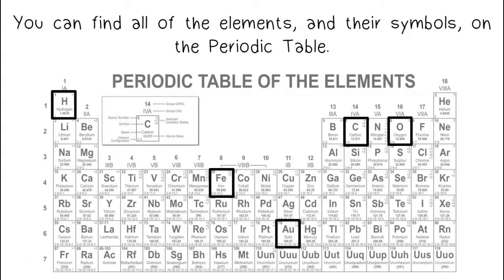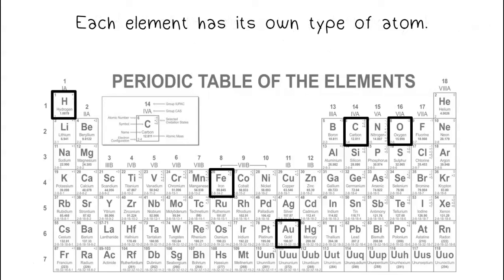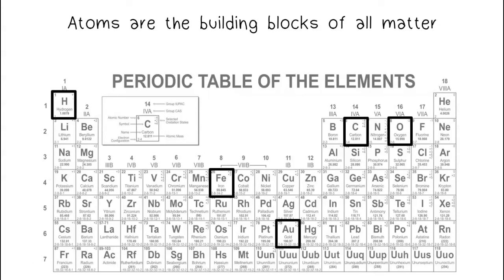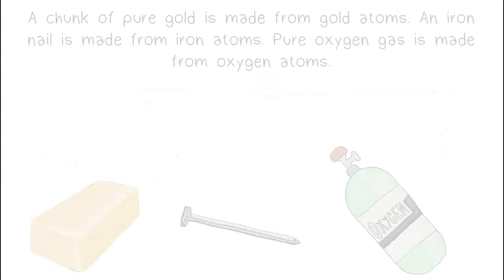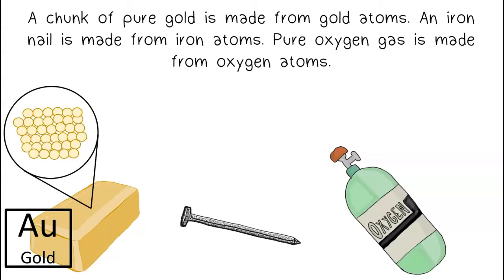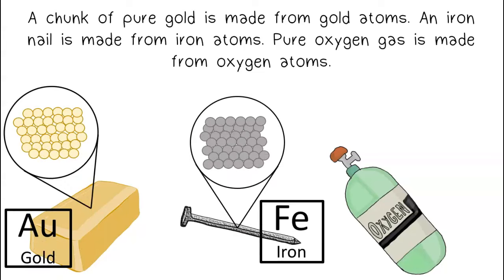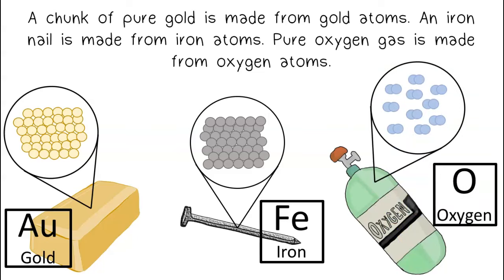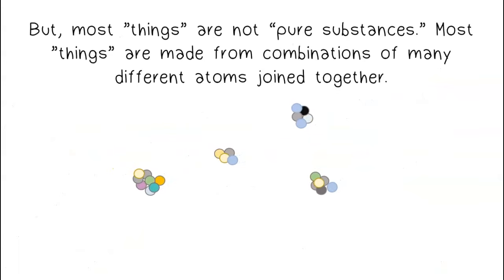Each element has its own type of atom, and atoms are the building blocks of all matter. For example, a chunk of pure gold is made from gold atoms, an iron nail is made from iron atoms, and pure oxygen gas is made from oxygen atoms.